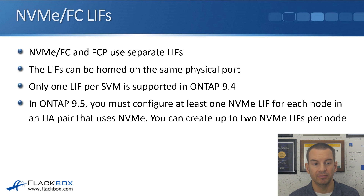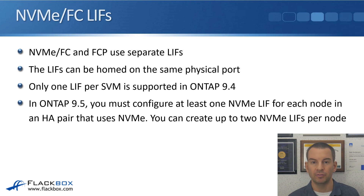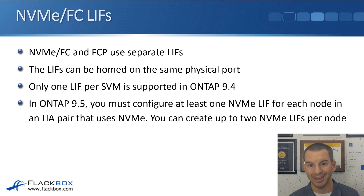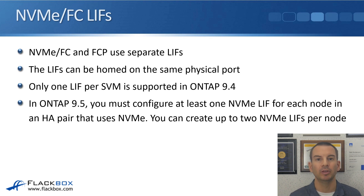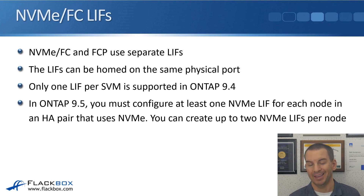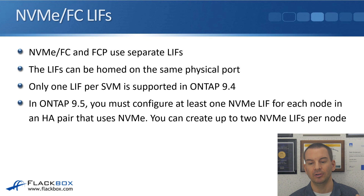Some details about how NVMe over FC works in ONTAP: NVMe over FC and traditional FCP Fiber Channel use separate LIFs, but those LIFs can be homed on the same physical port. This makes the transition a lot easier — if you're currently using Fiber Channel and want to migrate to NVMe over FC, you can use your existing infrastructure and the same ports concurrently. In ONTAP 9.4, only one LIF per SVM was supported with no redundancy. In ONTAP 9.5, you must configure at least one NVMe LIF for each node in an HA pair that uses NVMe, and you can create up to two NVMe LIFs per node for extra bandwidth.